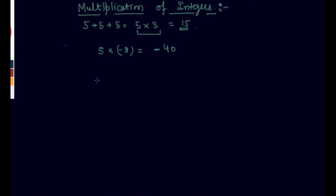Let me give you one more example. If I multiply negative 3 by negative 27, there are 2 negative signs. In the case of 2 negative signs, negative times negative will become positive. And 3 times 27 is 81, so I will write the answer as plus 81.